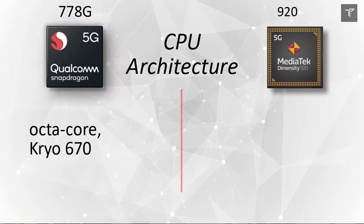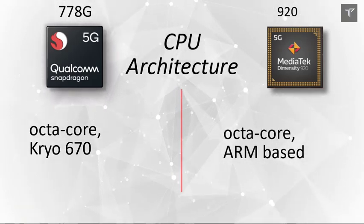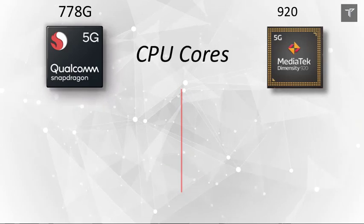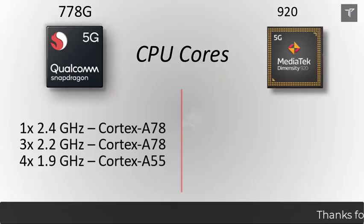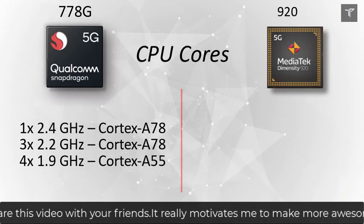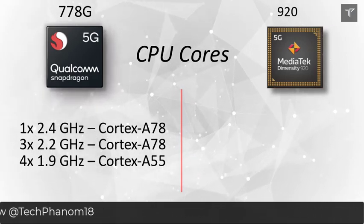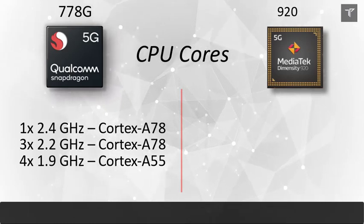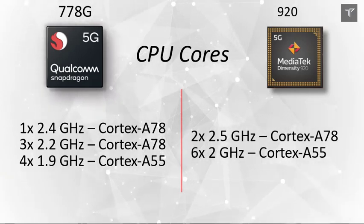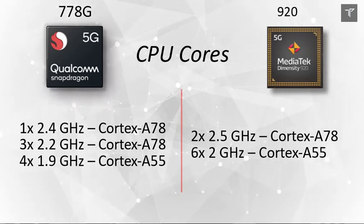Next is the CPU architecture. Both of these processors are octa-core, but the Snapdragon runs on Kryo 670 and Mediatek is based on an ARM processor. Talking about the CPU cores, the Snapdragon comes with 1 core at 2.4 GHz Cortex-A78, 3 cores at 2.2 GHz Cortex-A78, and 4 efficient cores at 1.9 GHz Cortex-A55. The Mediatek Dimensity 920 has a different approach, coming with 2 high-performance cores at 2.5 GHz Cortex-A78 and 6 cores at 2.0 GHz Cortex-A55.